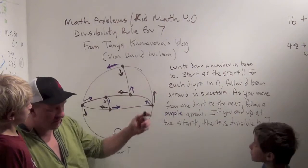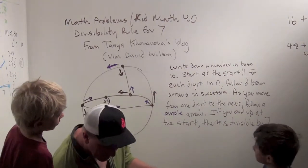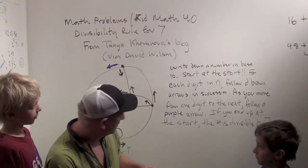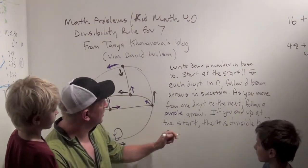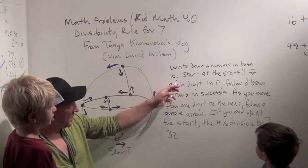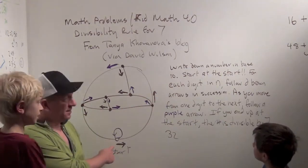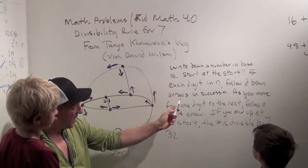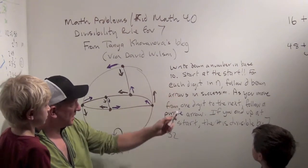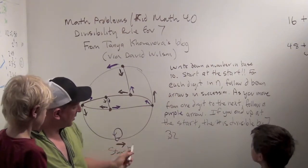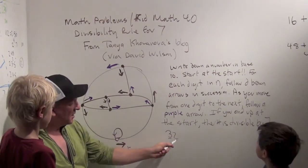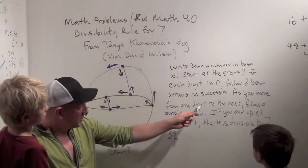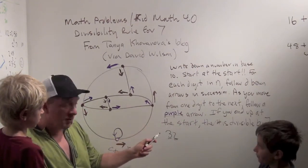So, here's the rule. You write down your number in base 10. So, give me a number in base 10. Let's see. Any number. It doesn't matter. 32. Okay. So, we're going to check out the number 32. Okay? Write down the number in base 10. Start at the start. For each digit in N, follow D brown arrows in succession. Oh, I didn't write that right. For each digit D in N. So, first we're going to follow three brown arrows in succession. And then we're going to follow two brown arrows in succession. As you move from one digit to the next, follow a purple arrow. One purple arrow.